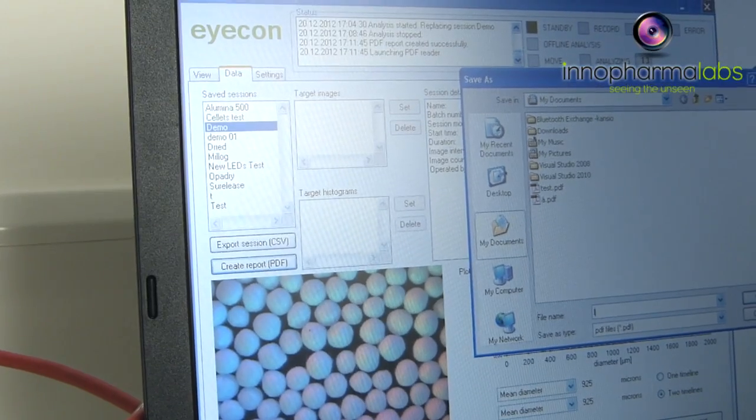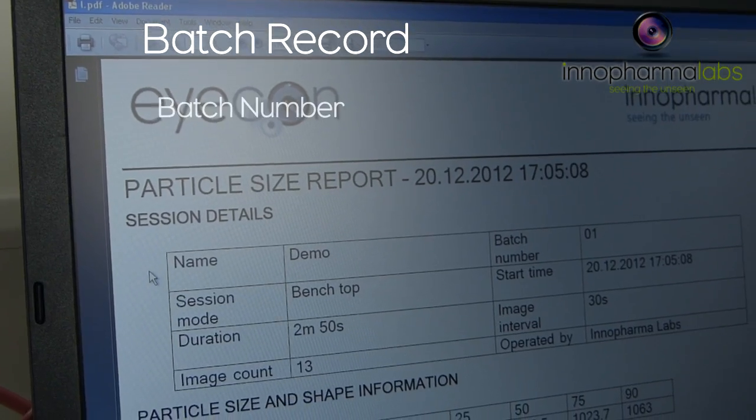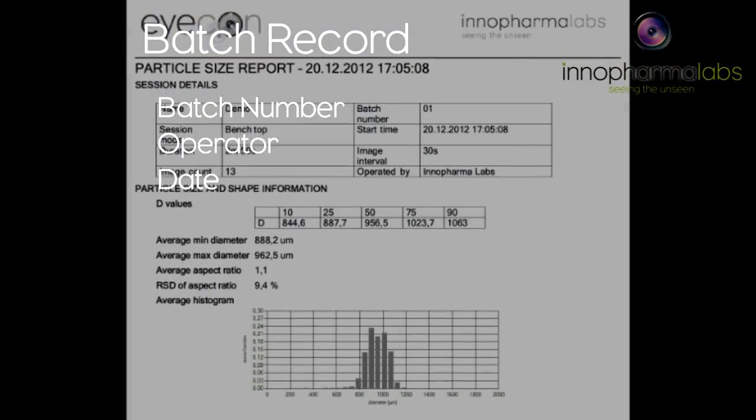A batch record for this measurement run can be produced. This record shows information on the run such as the batch number, operator and date.